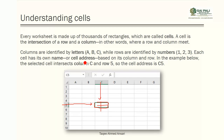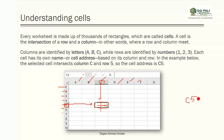Columns are identified by letters like A, B, C, D, E, F and rows are identified by numbers like 1, 2, 3, 4, 5, 6, 7. Each cell has its own name or cell address, based on the column and row number. For example, if I select this cell, the column is C and the row is 5, so the cell address is C5.